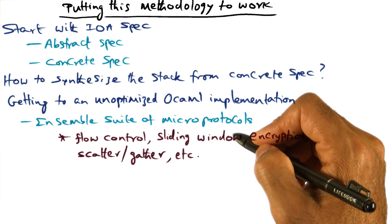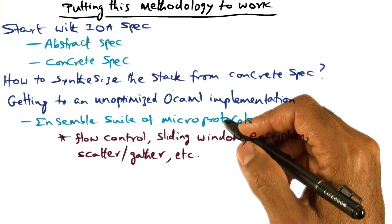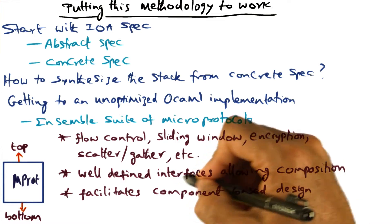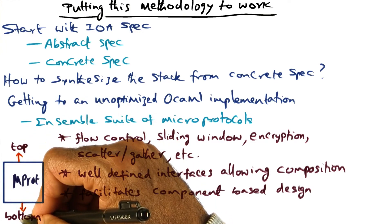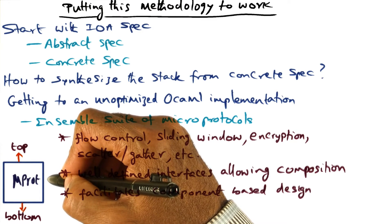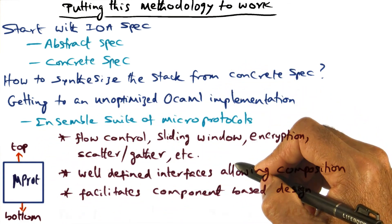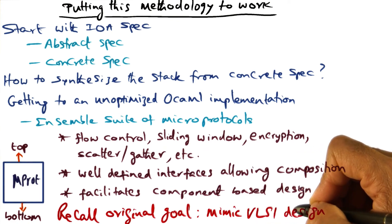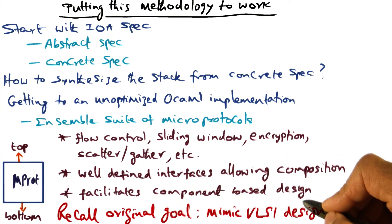The Ensemble suite has about 60 micro protocols written in OCaml, facilitating component-based design of a complex system such as a TCP/IP protocol stack. The micro protocols have well-defined interfaces that allow composition — every micro protocol has an interface for the layers that sit on top of it and an interface for interacting with layers below it. This is exactly the kind of component you want to assemble layer by layer to get the functionality of your intended protocol stack, mimicking VLSI design.